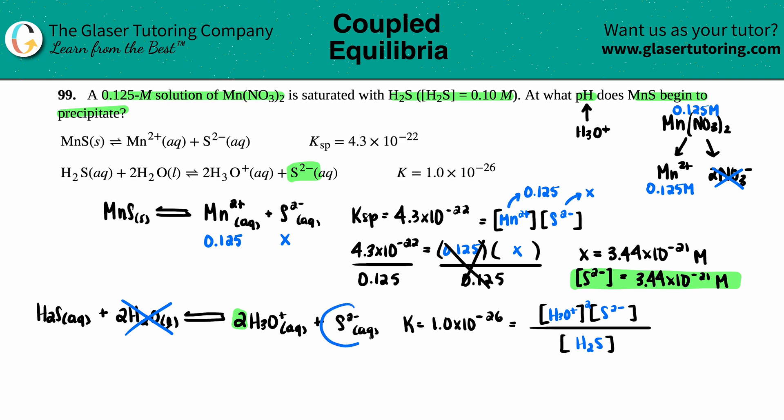Now let's see. The S²⁻ was what we just found out. So that's 3.44 times 10 to the negative 21. They did tell me that I'm starting off with H₂S of 0.10 molarity. So H₂S, 0.10 molarity. They didn't tell me anything about H₃O⁺.